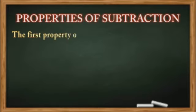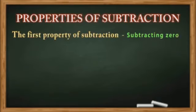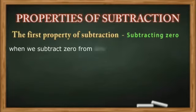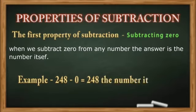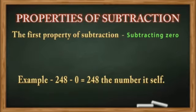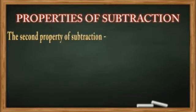Dear students, before subtraction we should know the properties of subtraction. The first property is subtracting zero: when we subtract zero from any number, the answer is the number itself. For example, 248 minus 0 is equal to 248. Whenever we subtract zero from any number, the answer is the number itself.